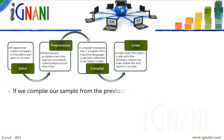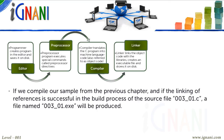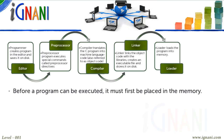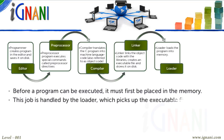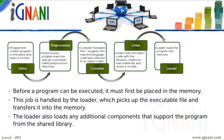With reference to the sample created in the previous chapter, if the linking of references is successful, then an executable .exe file will be produced. Loading: Before a program can be executed, it must first be placed in memory. This job is handled by the loader, which picks up the executable file and transfers it into memory. The loader also loads any additional components that support the program from the shared library.